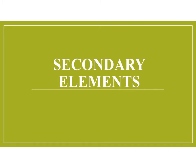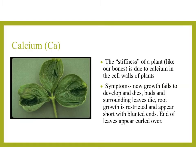Secondary elements. First: calcium. The stiffness of a plant — like our bones — is due to calcium in the cell walls. If deficient in calcium, some symptoms include that new growth fails to develop and dies, buds and surrounding leaves die, root growth is restricted and appears short with blunted ends, and the ends of the leaves appear curled.